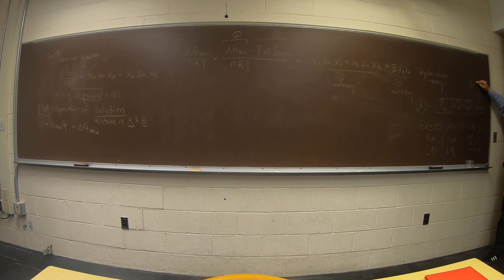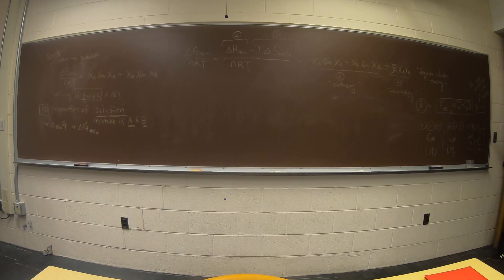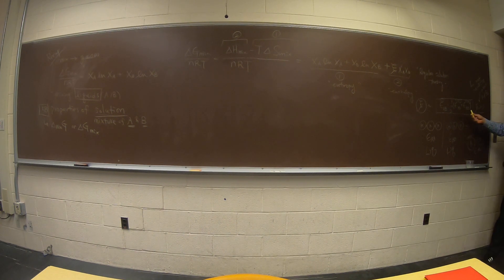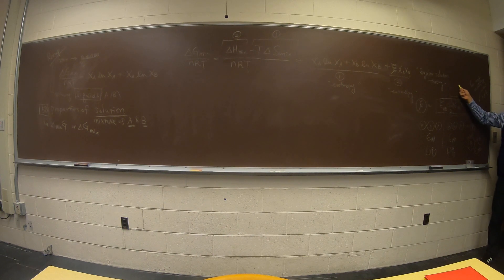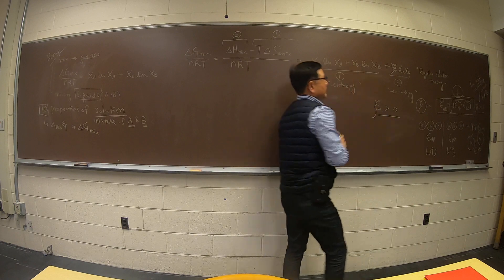By combining these, you start to get a net repulsive-type interaction between A and B. They do attract each other, but your reference point is what you had before mixing — so relative to that reference, this becomes positive and outweighs the negative term. Therefore chi is typically positive.